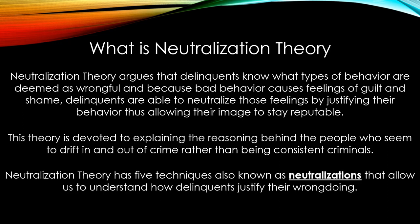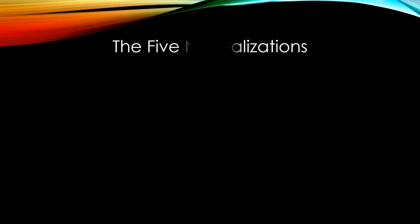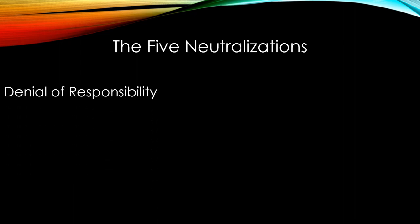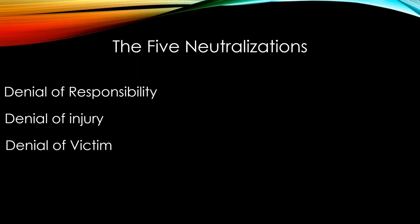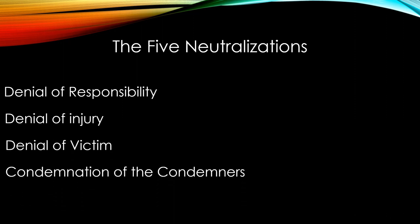Neutralization Theory has five techniques, also known as neutralizations, that allow us to understand how delinquents justify their wrongdoings. The five neutralizations are: denial of responsibility, denial of injury, denial of victim, condemnation of the condemners, and appeal to higher loyalties.